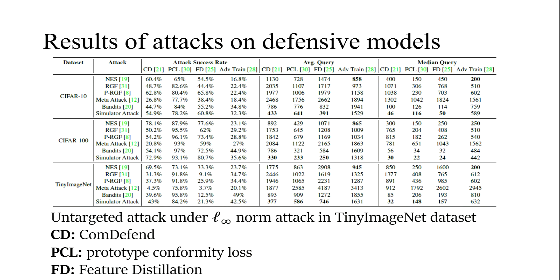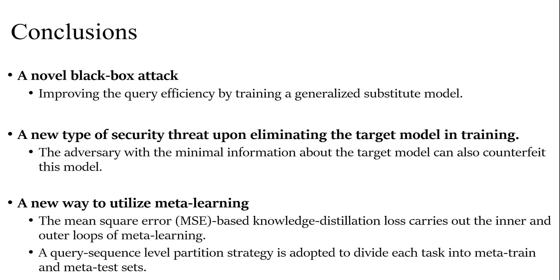We also attack four defensive models, including Adversarial Training, Calm Defender, and Feature Distillation. Our attack and bandits' attacks achieved the highest success rate in Adversarial Training. However, we achieved a much lower query number than the baseline bandits.